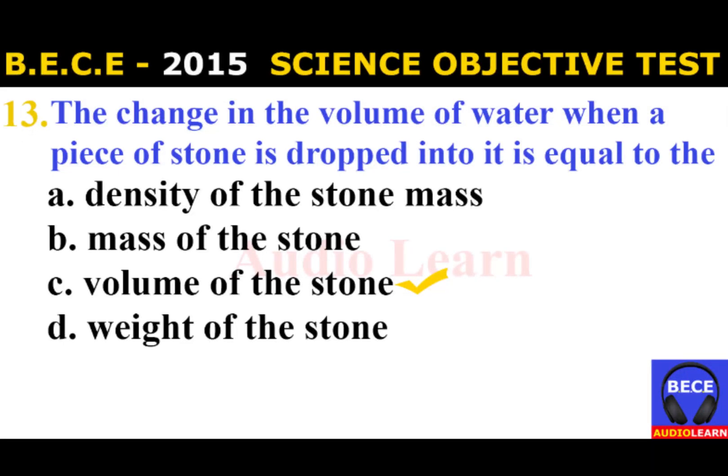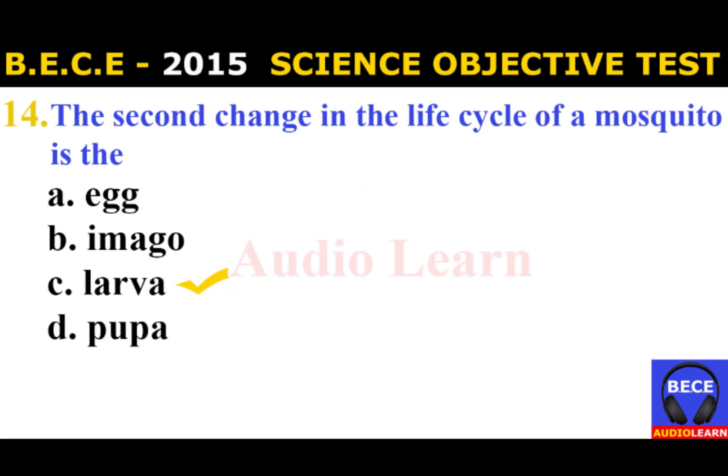Number 13: The change in the volume of water when a piece of stone is dropped into it is equal to the A. Density of the stone, B. Mass of the stone, C. Volume of the stone, D. Weight of the stone. The answer is C. Volume of the stone.